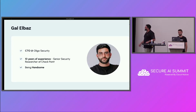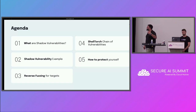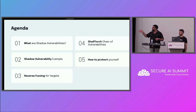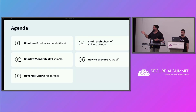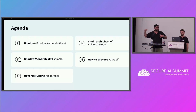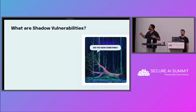Let's start with a quick agenda. What we're going to discuss today is the concept we dubbed shadow vulnerabilities — those types of risks that don't get a CVE assigned. We'll deep dive into one famous shadow vulnerability that led to the discovery of ShellTorch. Then we'll discuss how we scaled it using a new approach called reverse fuzzing — basically traditional fuzzing, but the other way around. Then the ShellTorch vulnerabilities themselves, and how you can detect or even prevent those types of attacks.